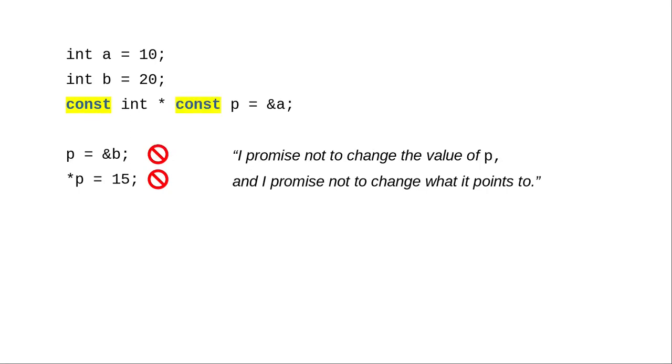You can even use const in both places to make a promise that you will never change the pointer to refer to a new location, and you'll never use the pointer to change the value it points to. Read this declaration as, p is a constant pointer to a constant integer. Use whichever of these combinations your program requires.